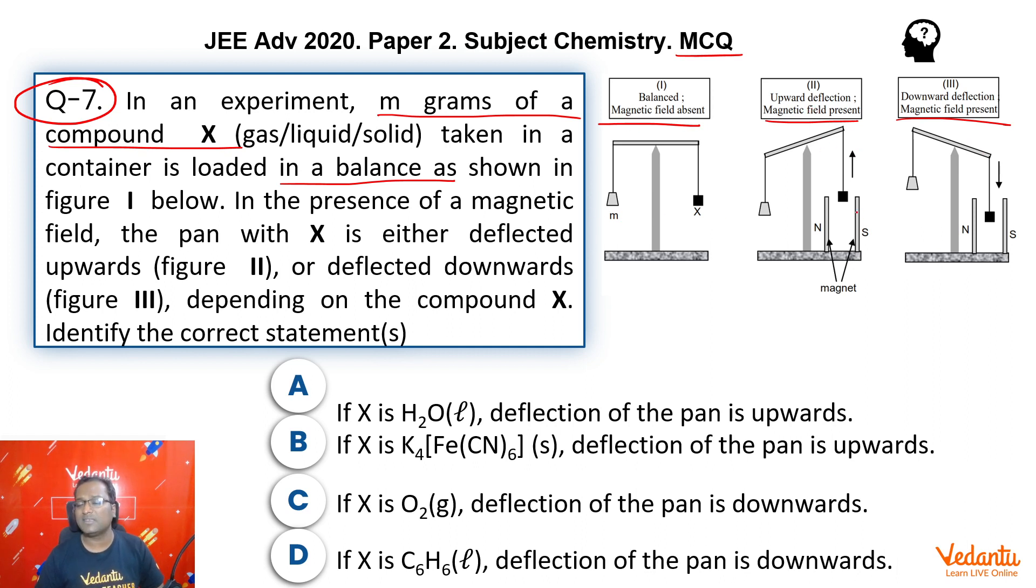In presence of magnetic field, in certain cases it is deflected upwards, in certain cases it is deflected downwards. This is the given observation. Now we have to tell which of the following are correct statements and we have some compounds given to us. So let's first try and understand what is happening here.